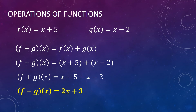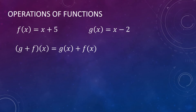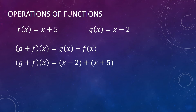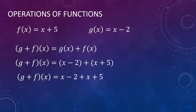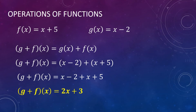So this is the sum of our functions. Now if we do g plus f of x, the answer should be the same as f of x plus g of x, since the operation is addition and no signs will change. So it's just x minus 2 plus x plus 5, which also gives us g plus f of x equal to 2x plus 3.